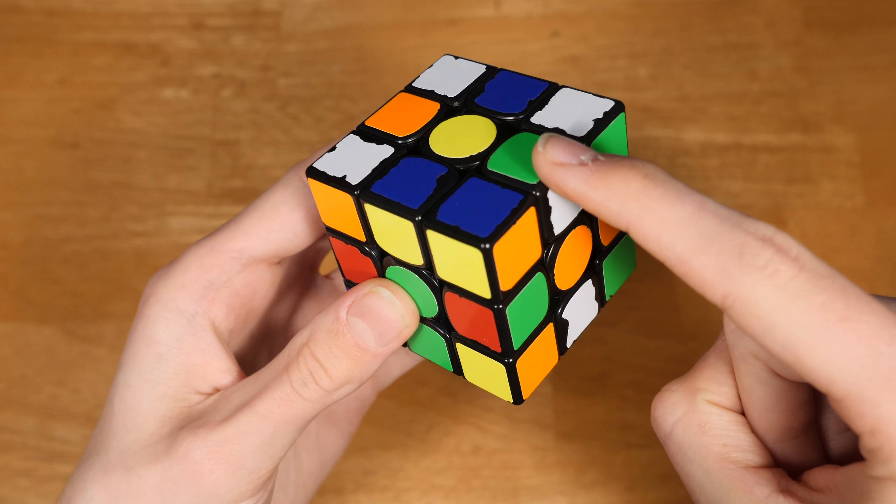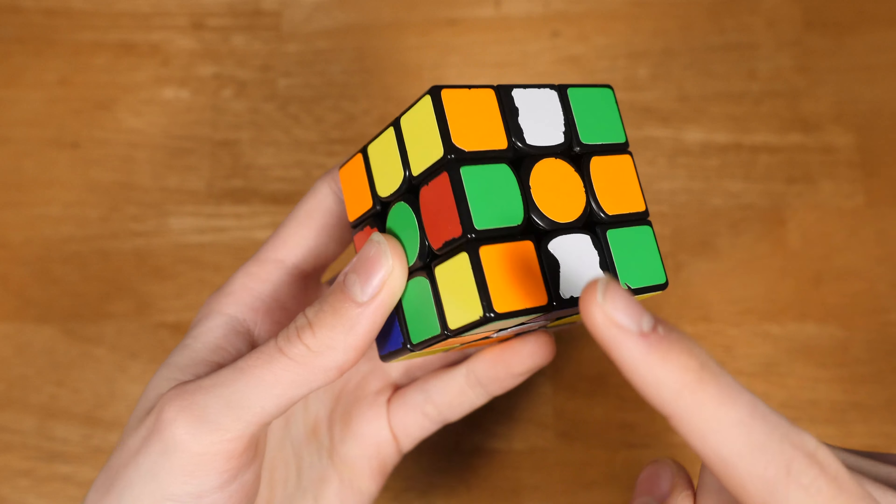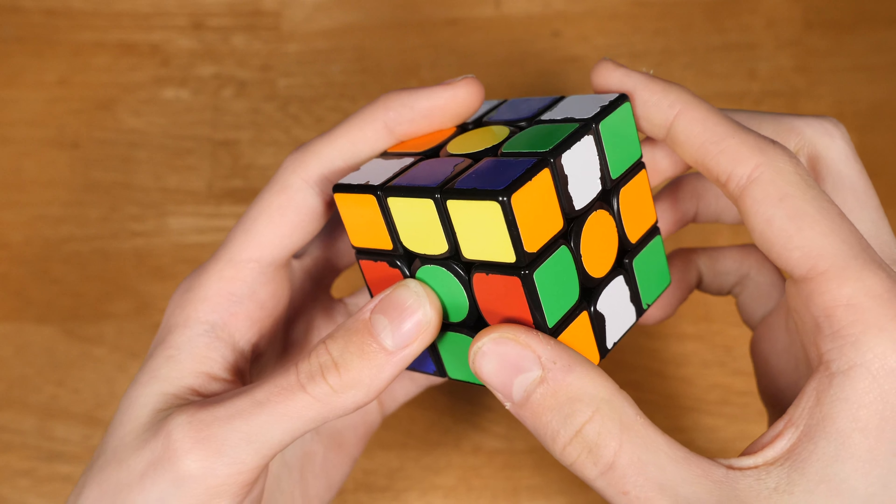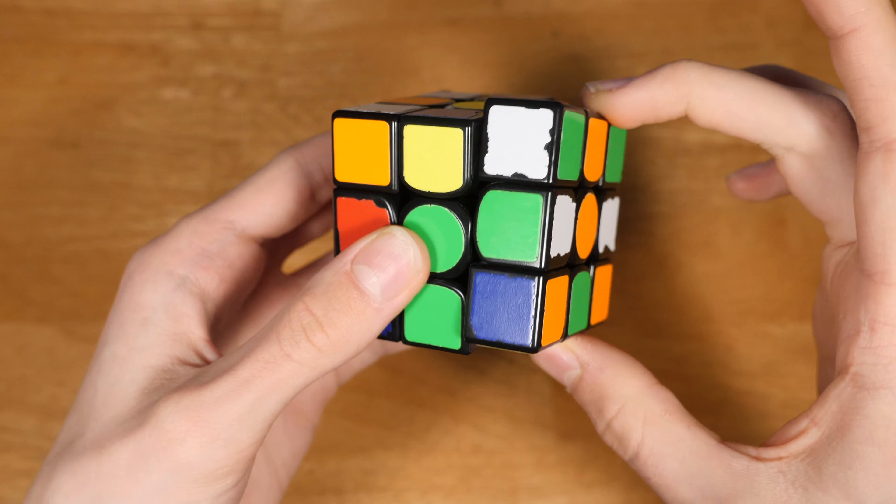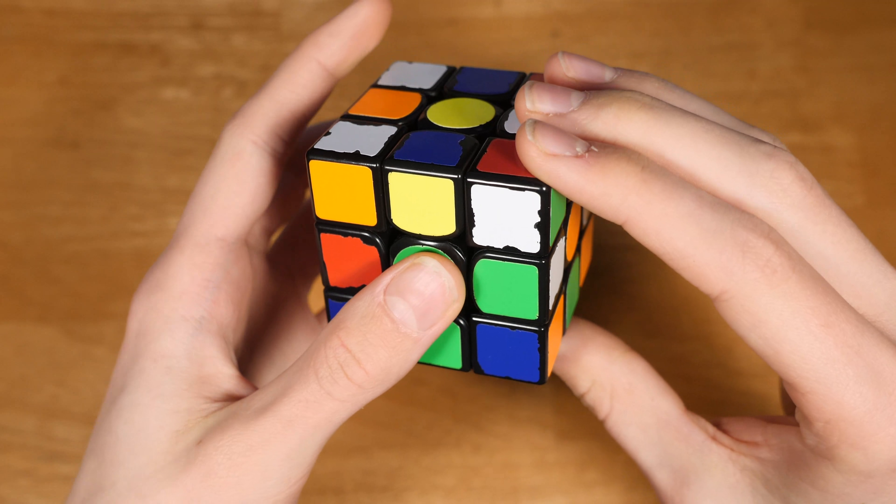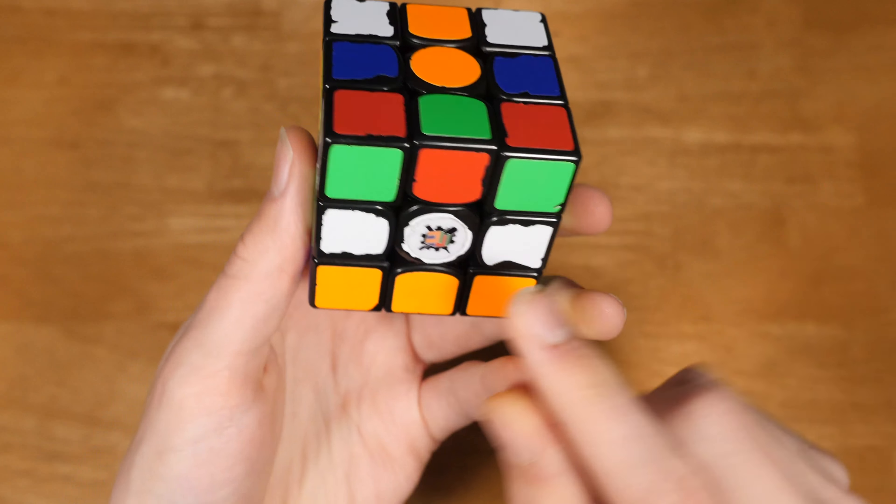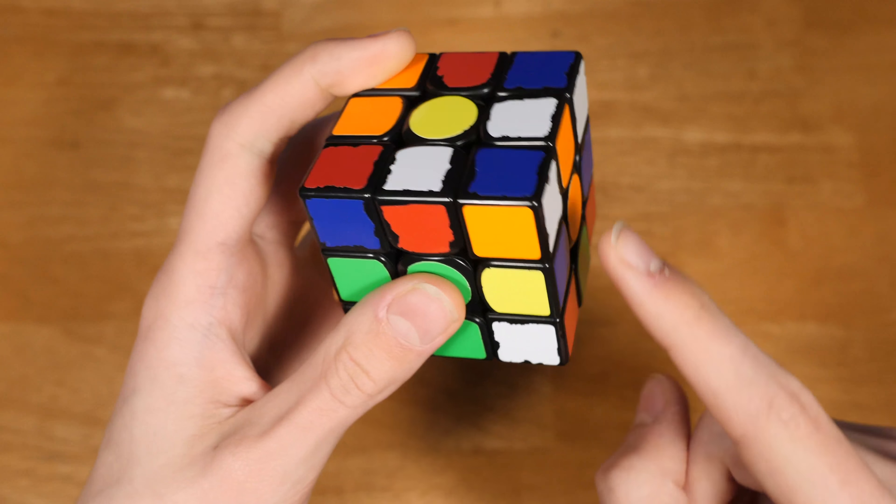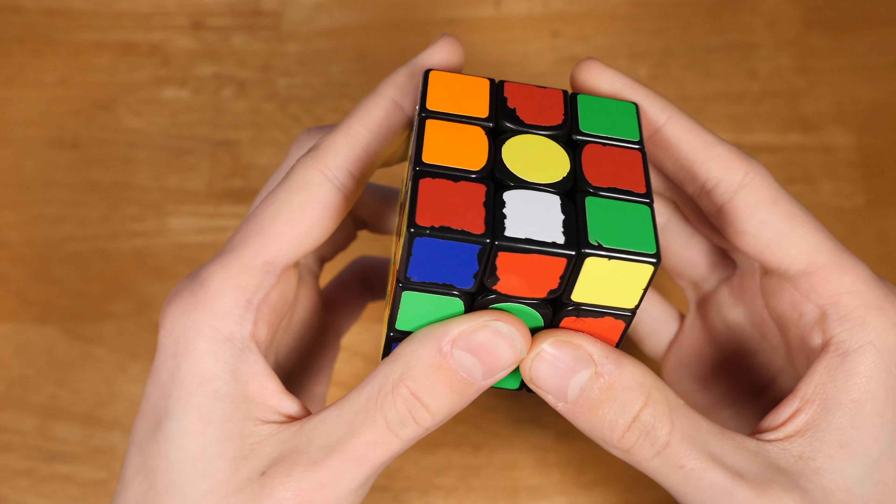What he sees is that these two, relative to each other, are solved. So he's going to solve them at the same time by doing an R' to put them both in, then FB' with both fingers to insert them into the bottom layer, and then R2 for that one.